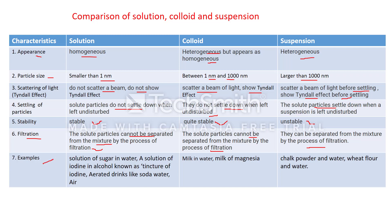Examples of each type — Solution: sugar solution in water, solution of iodine in alcohol (also known as tincture of iodine), aerated drinks like soda water, air. Colloid: milk in water, milk of magnesia (a colloid of magnesium hydroxide used to treat acidity). Suspension: chalk powder in water and wheat flour in water.